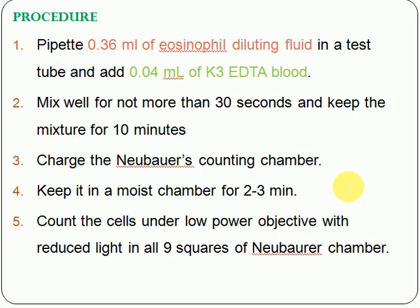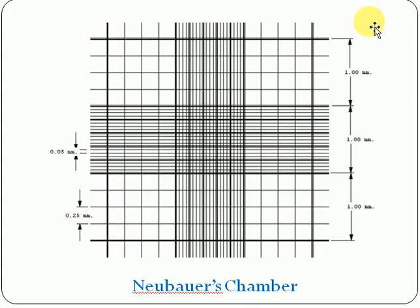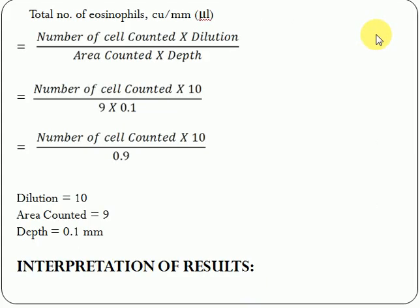You need to count cells in all nine squares of the Neubauer chamber. Here is the picture of the Neubauer chamber as seen under the microscope. The nine squares are numbered one through nine — you need to count the entire area. Once you have counted the whole area, record the cell count and use the formula to calculate the actual number in cells per cubic mm.